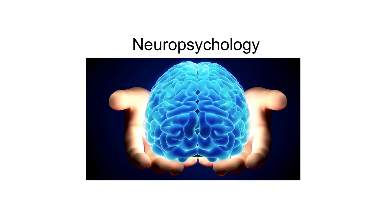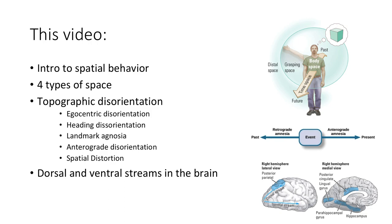Hi everyone and welcome back to neuropsychology. Today we're going to start off with a new chapter about spatial behavior. In this video we are going to talk about the intro to spatial behavior, four types of space, topographic disorientation and some examples of it, and the dorsal and ventral streams in the brain.